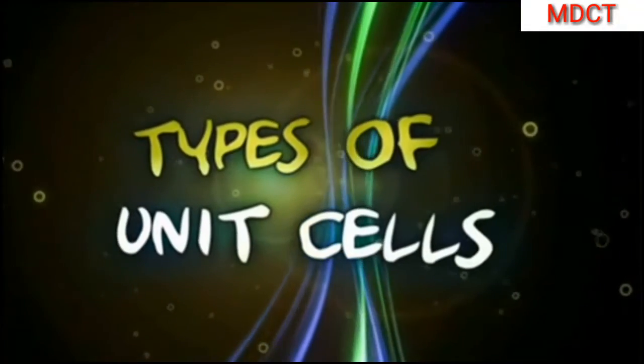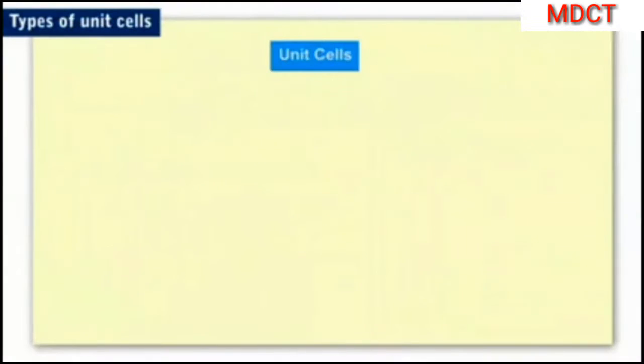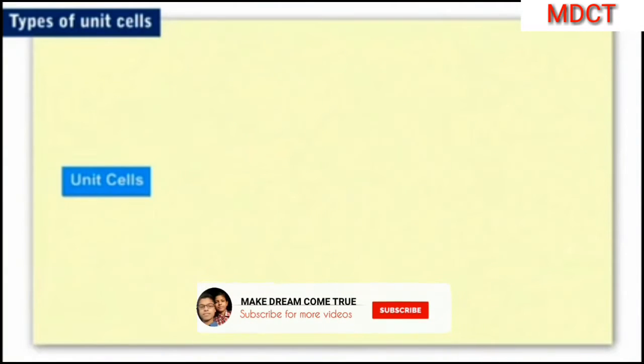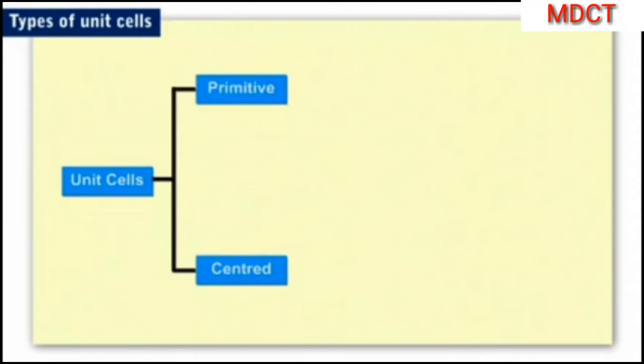Let us now study about the types of unit cells. Unit cells can be broadly classified into two categories: primitive unit cells and centered unit cells.